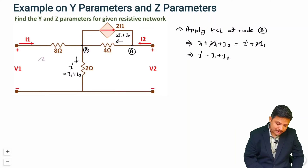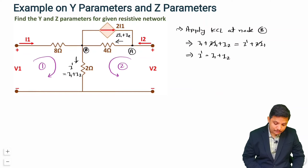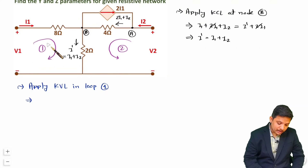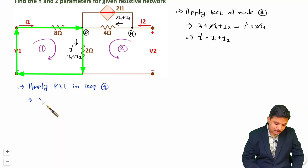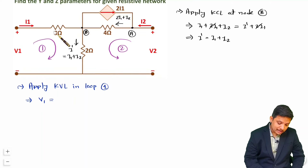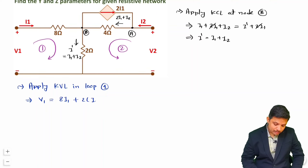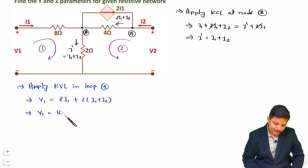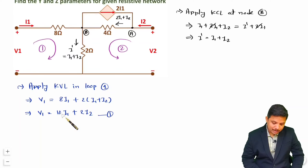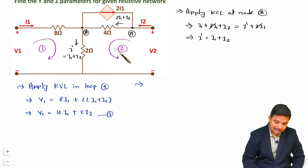We can apply KVL in loop 1 and KVL in loop 2. Applying KVL in loop 1: V1 is traversed from minus to plus, so plus V1 equals the voltage across the 8-ohm resistor carrying current i1 plus the voltage across the 2-ohm resistor carrying current i1 plus i2. Simplifying: V1 equals 10·i1 plus 2·i2.